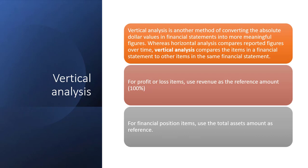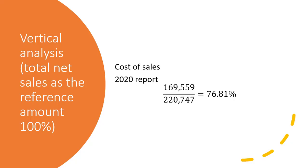In vertical analysis, we compare figures for a particular year by setting a reference amount and comparing each item against it. For profit or loss items we use revenue as the reference amount, while for financial position items we use total assets. The total net sales from Apple Inc.'s statement of operations is the reference amount for profit or loss items. In the 2020 report, cost of sales of 169 divided by 220 gives 76.81%, meaning cost of sales is 76.81% of total net sales.